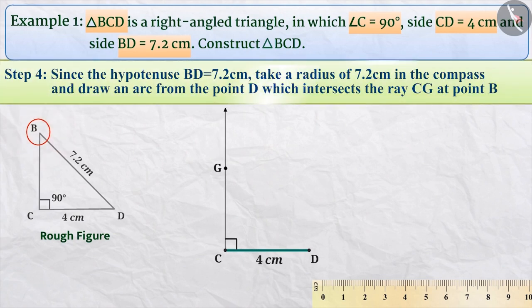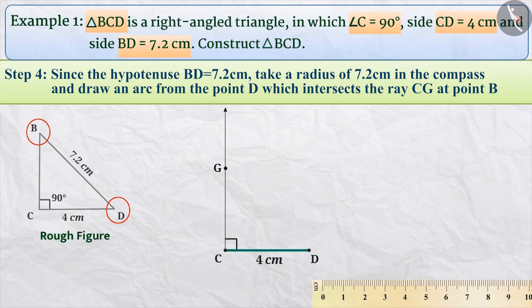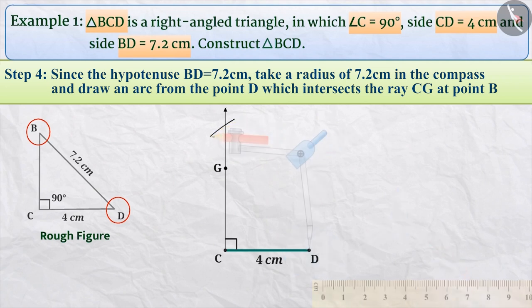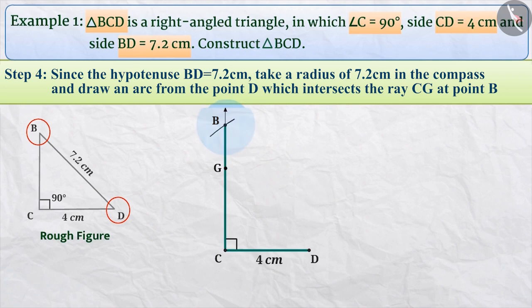Step 4: We are given the length of side BD as 7.2 cm, meaning vertex D is at 7.2 cm distance from vertex B. Vertex B must be present somewhere on perpendicular ray GC. Therefore, we will take a radius of 7.2 cm in the compass and draw an arc taking vertex D as center, which will intersect perpendicular ray GC at one point. This intersection point is vertex B of triangle BCD.